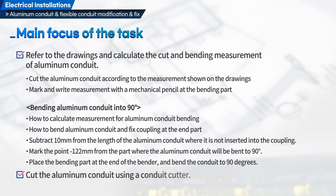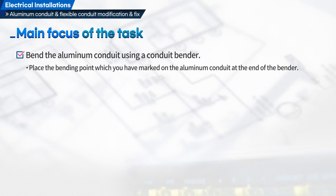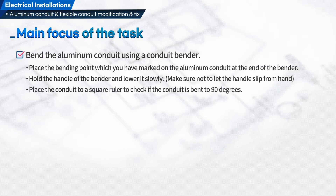Second, cut the aluminum conduit using a conduit cutter. Third, bend the aluminum conduit using a conduit bender. Place the bending point which you have marked on the aluminum conduit at the end of the bender. Hold the handle of the bender and lower it slowly. Make sure not to let the handle slip from your hand. Place the conduit against a square ruler to check if the conduit is bent to 90 degrees.